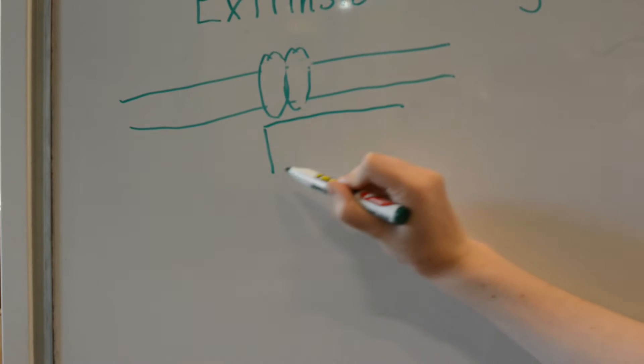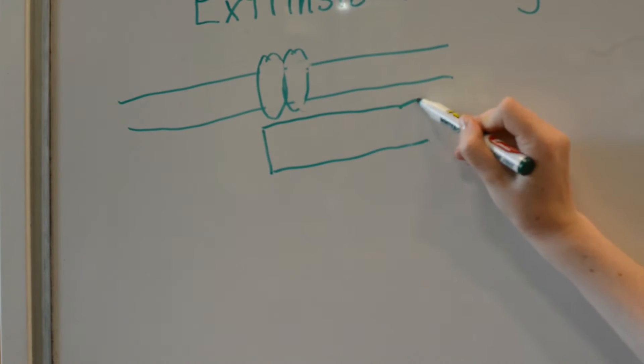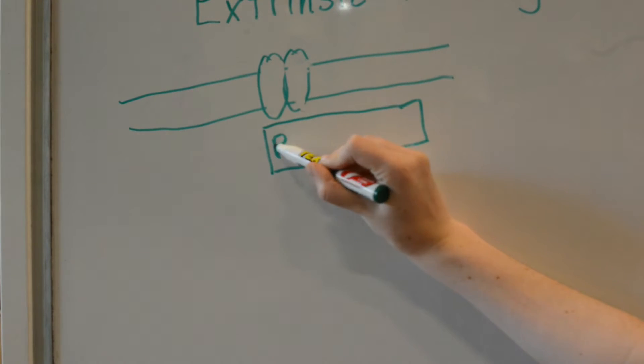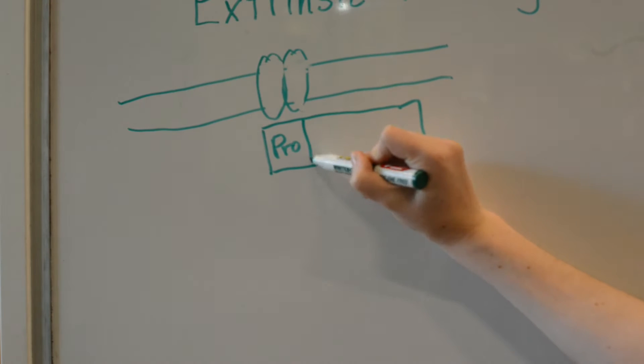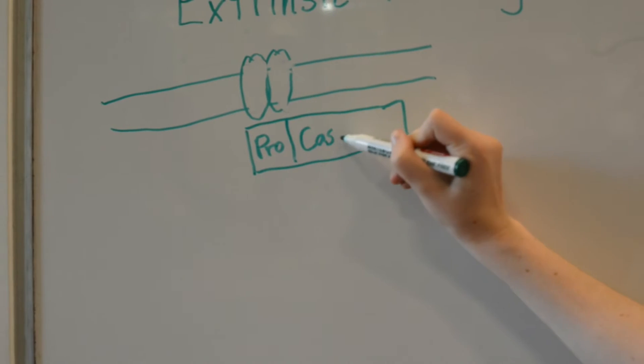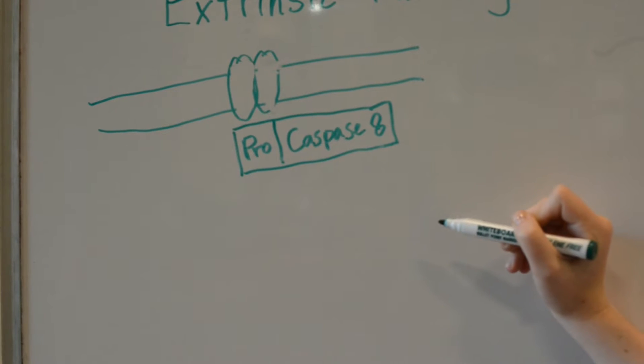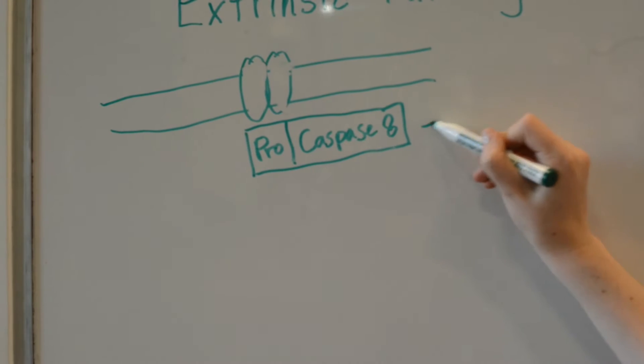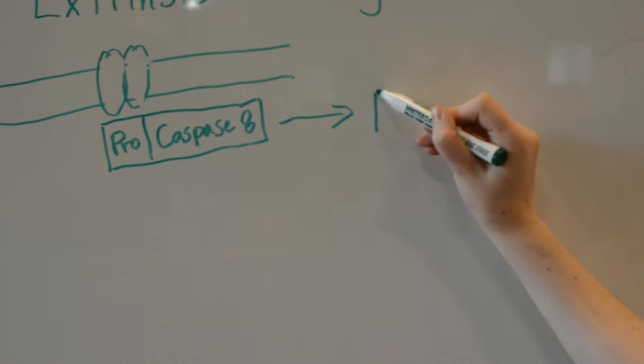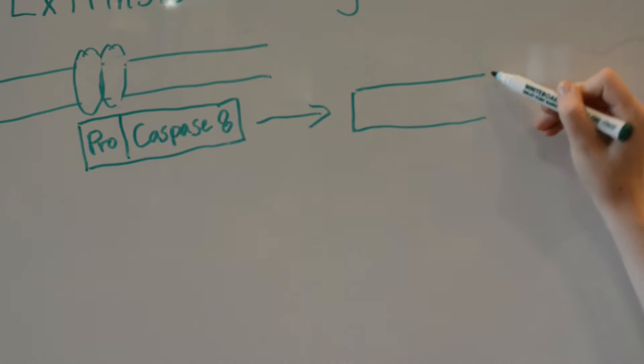These receptors consist of a death domain, an intracellular protein interaction domain where the DISC complex is formed for the induction of apoptosis. This causes the activation of procaspase 8 to form caspase 8 via proteolytic cleavage.